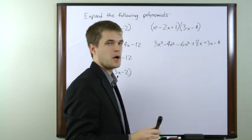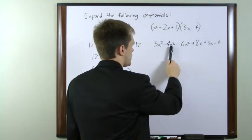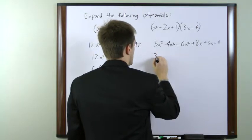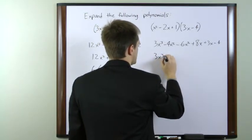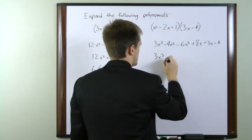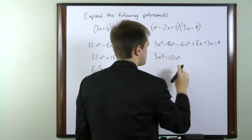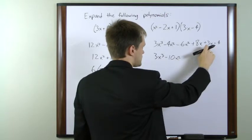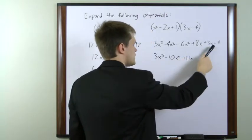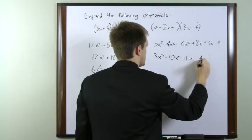Now once again, we need to combine like terms. We have a pair of x squareds and a pair of x's, so we'll go ahead and combine those. We have 3x cubed minus 4x squared minus 6x squared gives us minus 10x squared, plus 8x plus 3x gives us plus 11x, and we still have minus 4.